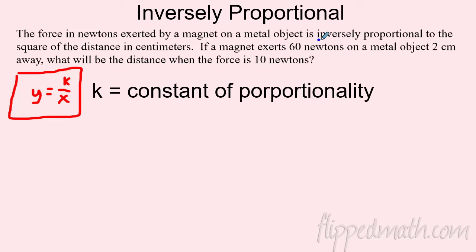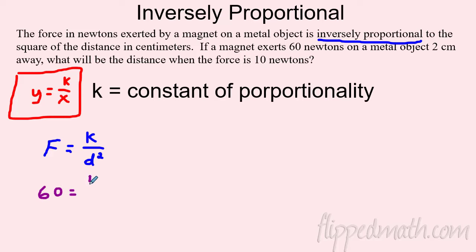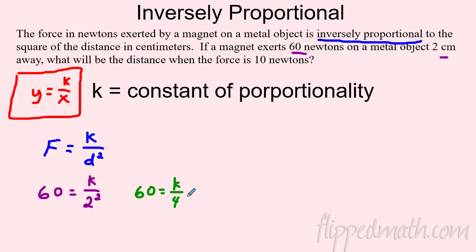Example: the force in Newtons observed by a magnetic metal object is inversely proportional to the square of the distance. As soon as you see 'inversely proportional,' you know F = k/d². It tells you the force is 60 Newtons when the object is 2 centimeters away. So plug in: 60 = k/2², which is k/4. Multiply both sides by 4: k = 240. That's our constant of proportionality.